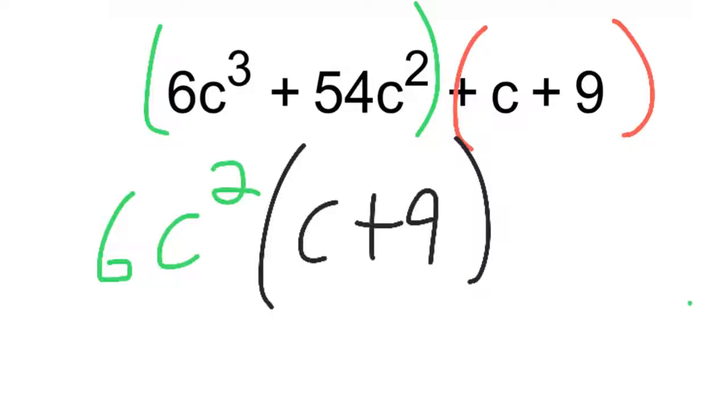Same thing over here, I was dividing this by a six c squared, because that's what I saw in common. So fifty-four divided by six gave me nine, c squared divided by c squared gave me one, so no need to write times one there.